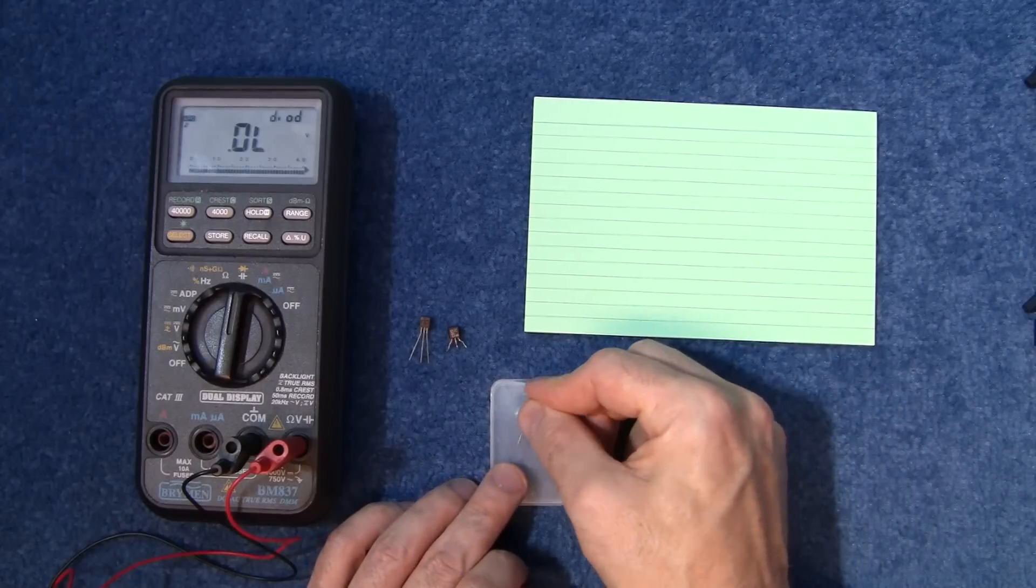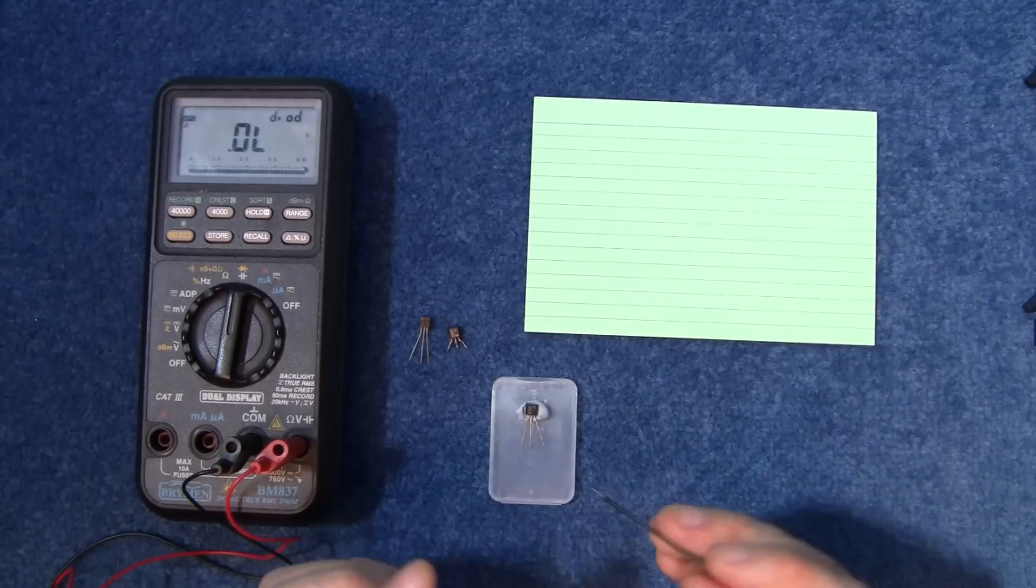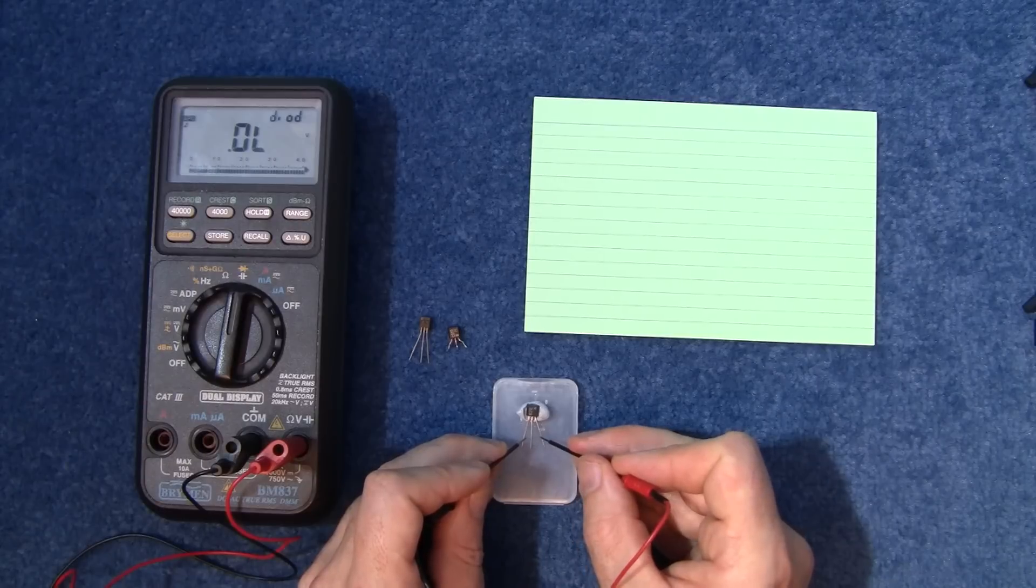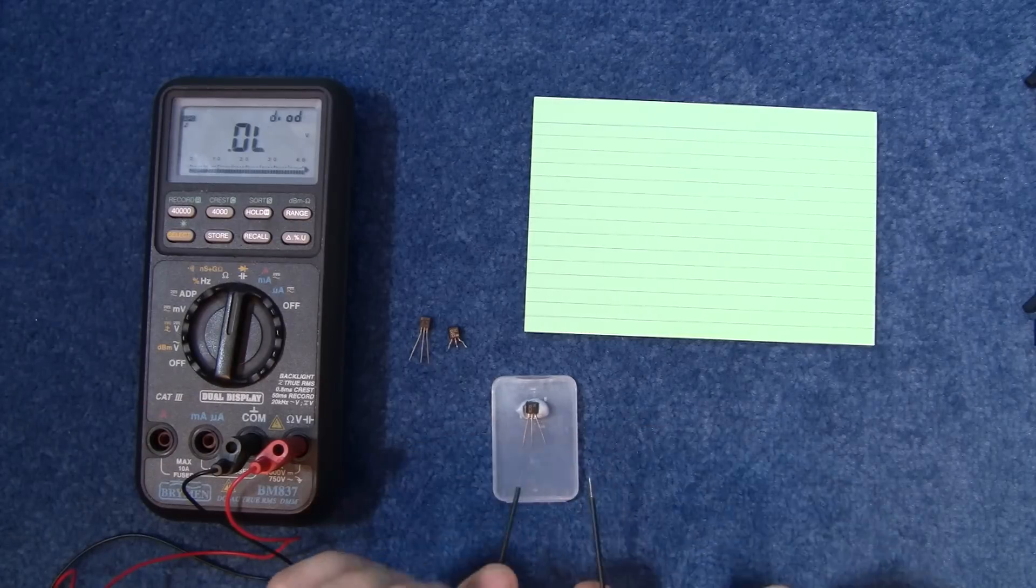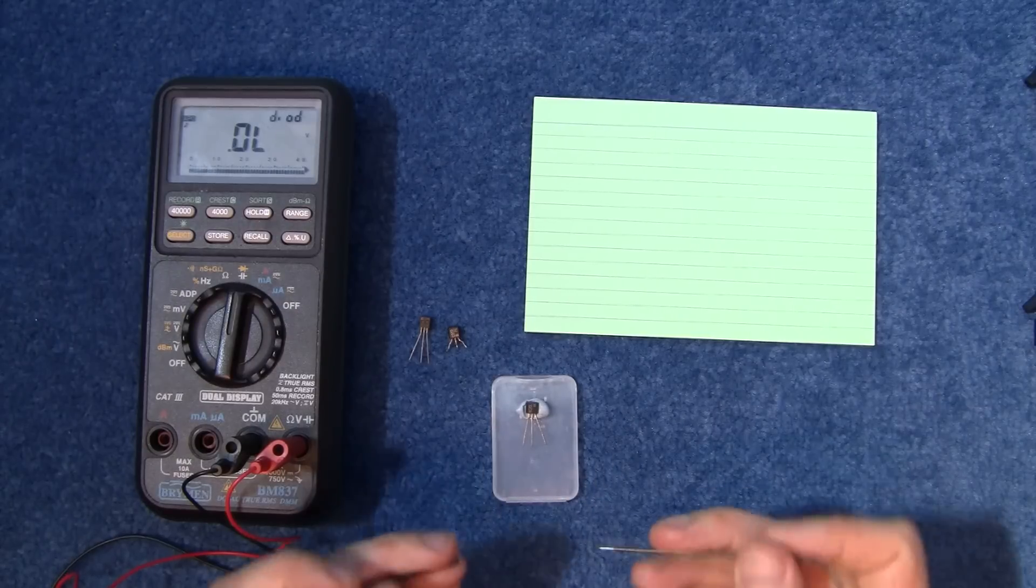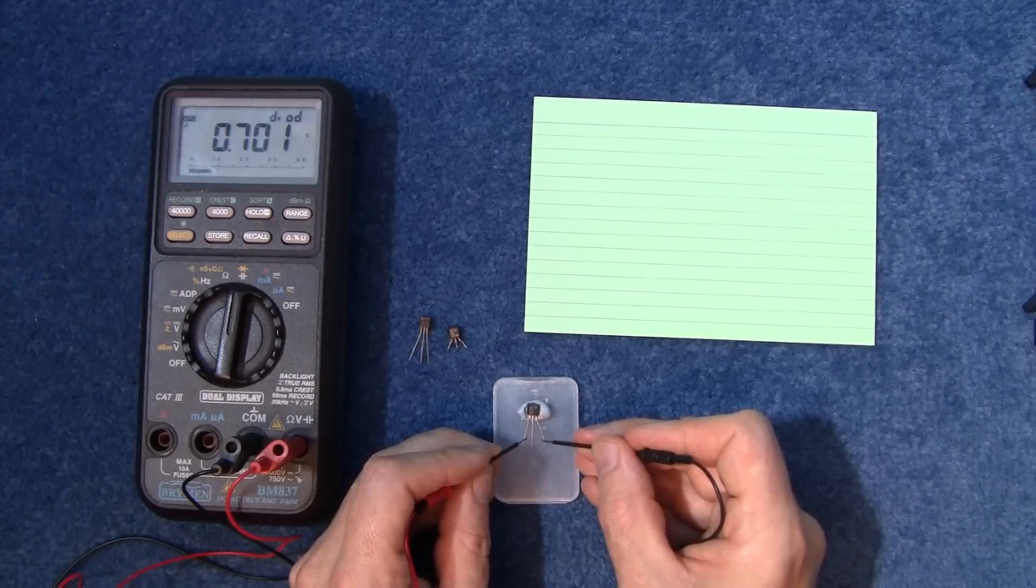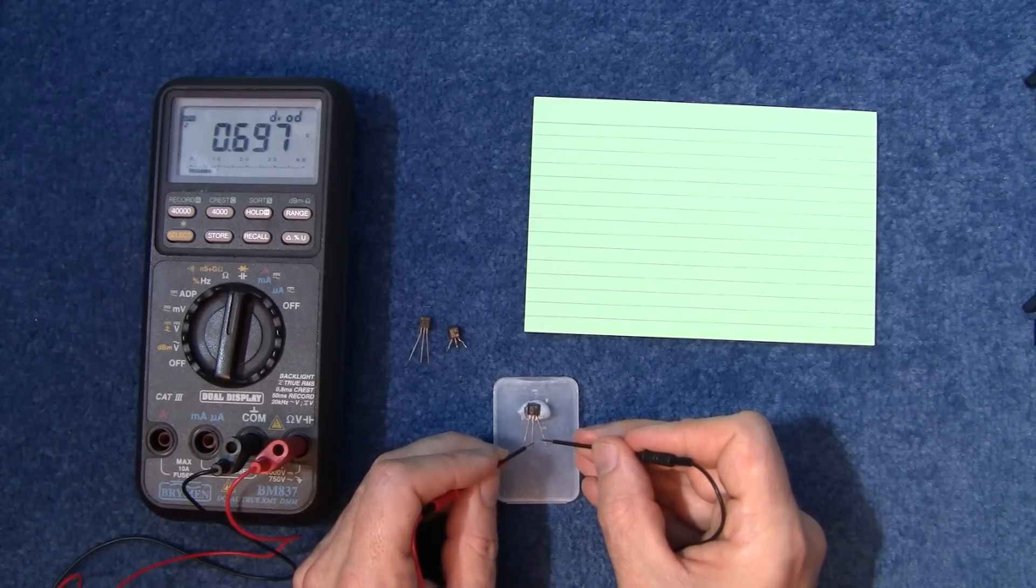Now I'll test another one and do exactly the same. Check between those two, nothing, nothing, nothing. Swap them over, nothing. Now we have a reading and we have a reading there.